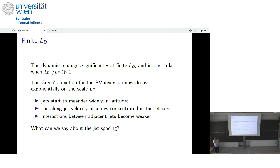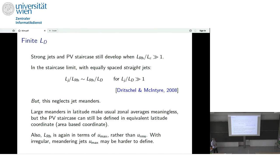That was all barotropic. The first thing is that when you add a finite deformation radius, things get rather more complicated. Including the deformation radius in the potential vorticity changes the inversion relation between potential vorticity and stream function. So, it's a much more local inversion. The influence of a delta of PV decays exponentially on the scale of the deformation radius. And the result is jets start to meander. So, they're no longer straight. The zonal jet velocity becomes very concentrated in the jet core. And the interactions between adjacent jets becomes weaker.